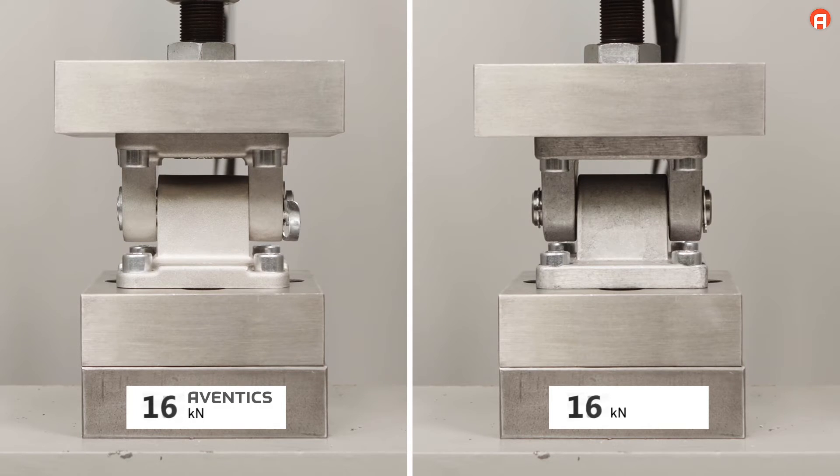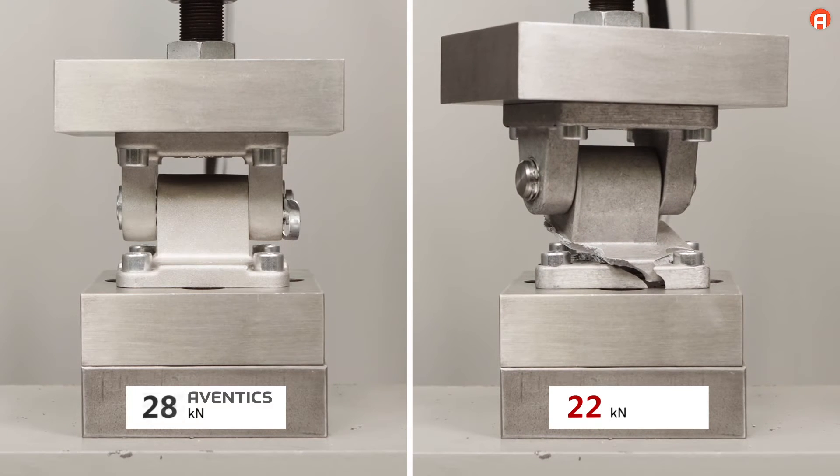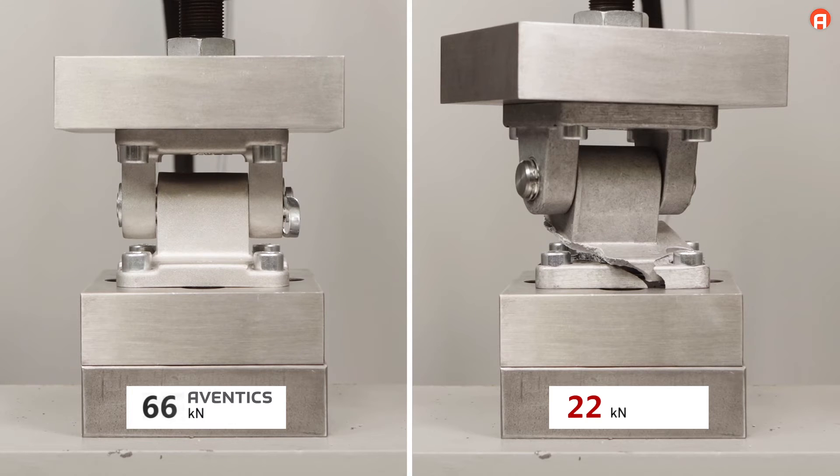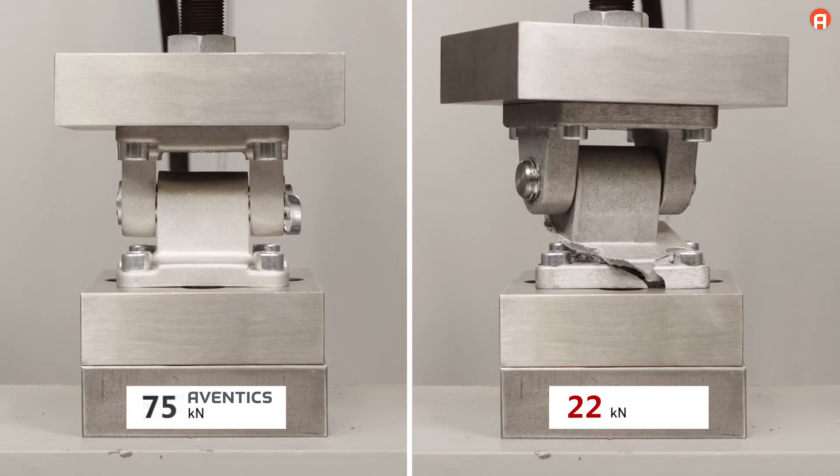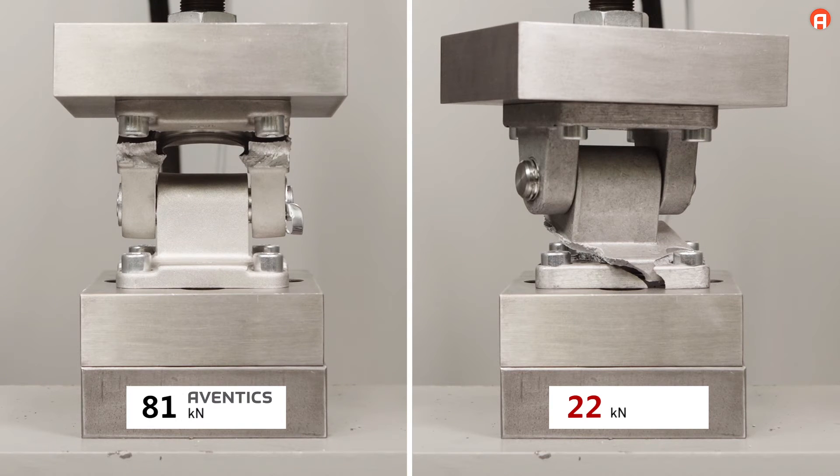The die-cast aluminum mounting breaks at only 22 kN. The forged mounting withstands the increasing load. The forged aluminum mounting only breaks at 81 kN. This means it can withstand three times the load.